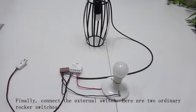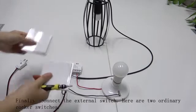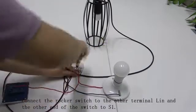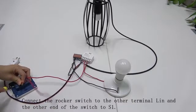Finally, connect the external switch. Here are two ordinary rocker switches. Connect the rocker switch to the other terminal, L-In, and add the end of the switch to S1.